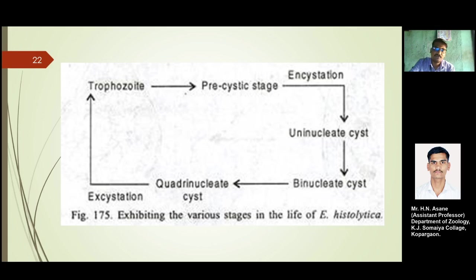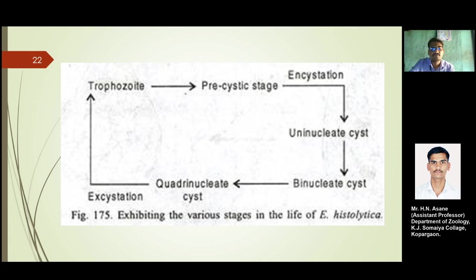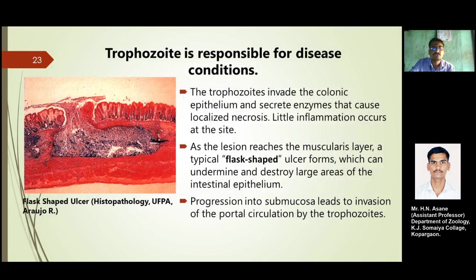The binucleated cyst gets converted into the quadranucleated cyst. From the quadranucleated cyst to the trophozoite — the four-nucleated stage gets converted into eight daughter trophozoites. This process, from the quadranucleated cyst converting into trophozoites at the submucosal layer forming lesions at the large intestine, is known as excystation. These are all the various stages of the life cycle of Entamoeba histolytica.